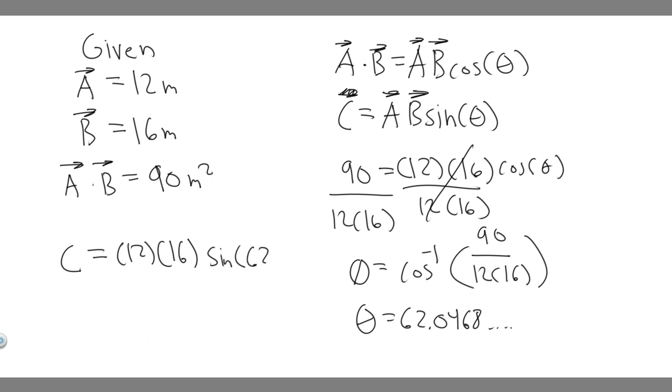So it's like 62.0468. I'm using the calculator value, or the exact value. And so when you go ahead and do this, you're going to find C is equal to 169.5995 and so on. I'm just going to round it to 169.60.